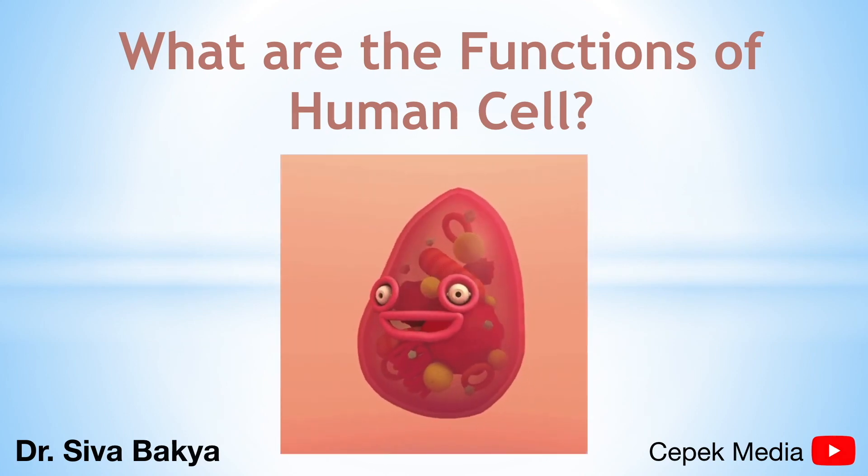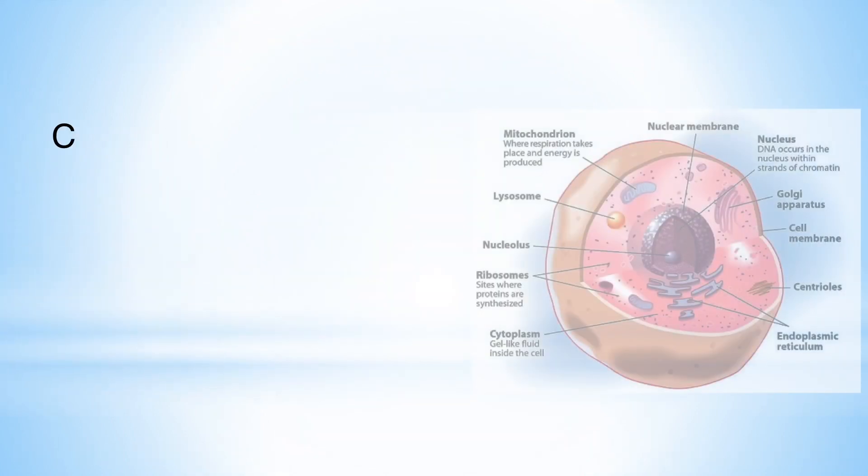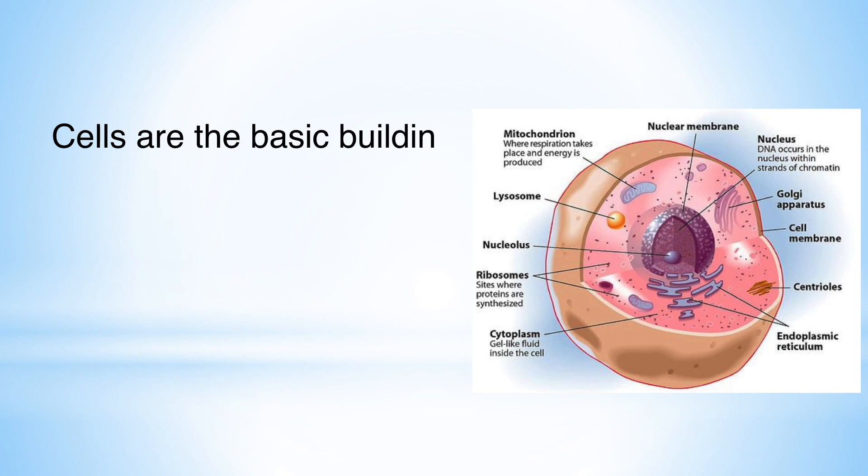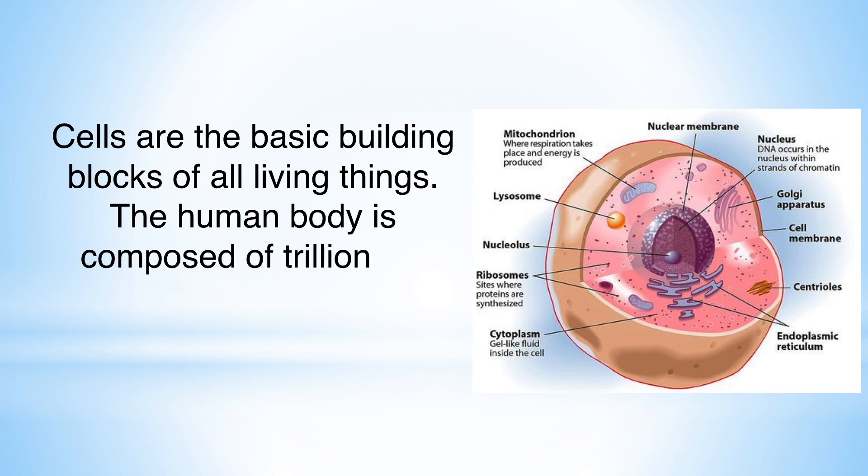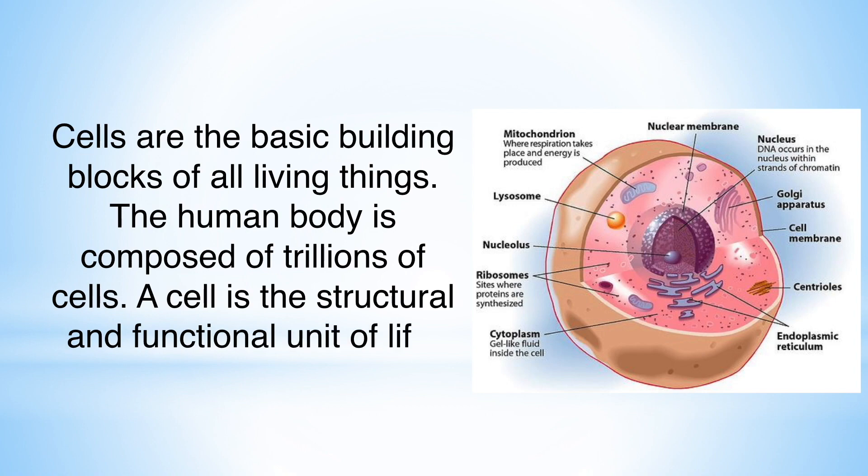What are the functions of human cell? Cells are the basic building blocks of all living things. The human body is composed of trillions of cells. A cell is the structural and functional unit of life.